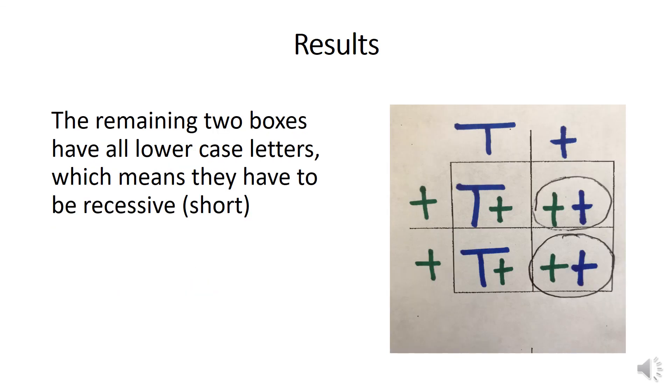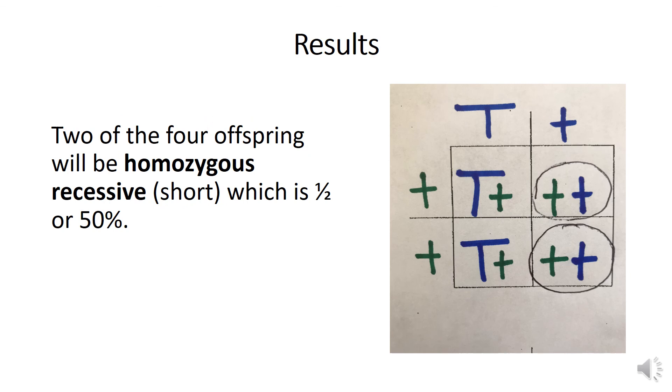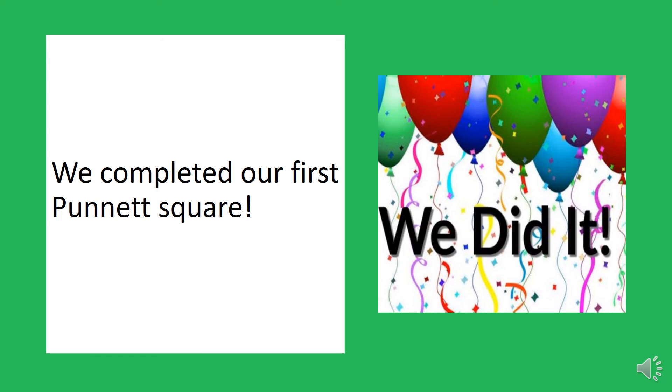The remaining two boxes have all lowercase letters, which means they have to be recessive short. This means that two of the four offspring will be homozygous recessive, which is one half or 50 percent. And that, folks, is a Punnett square in a nutshell. Great job.